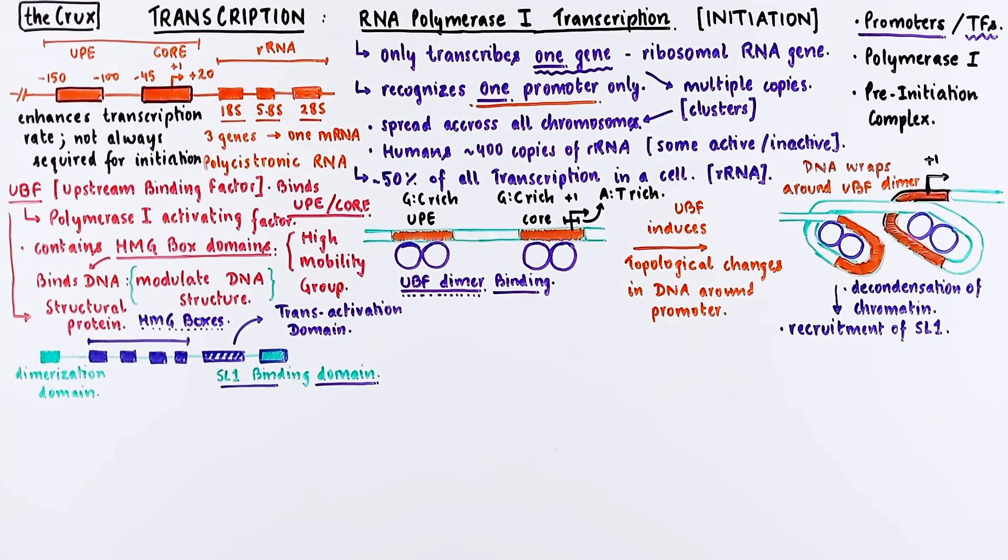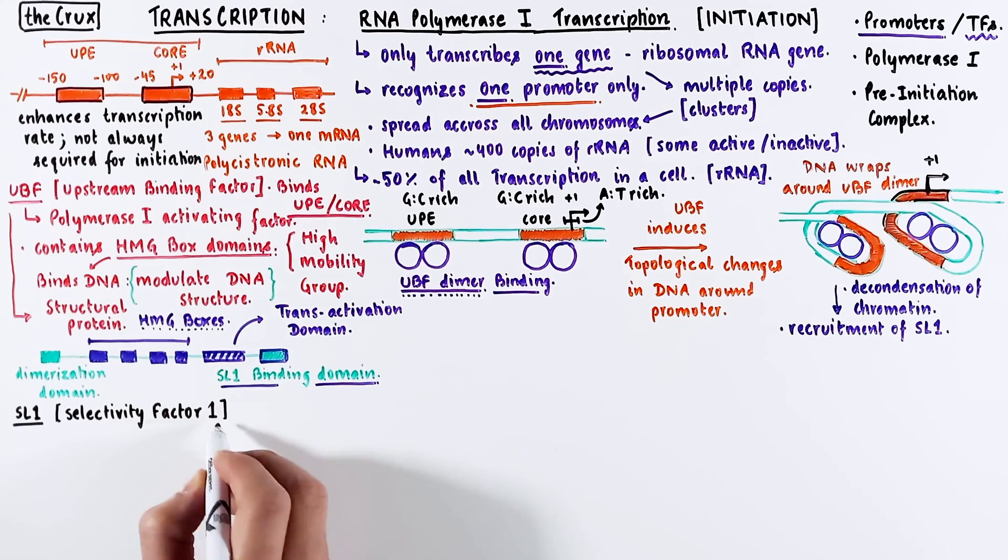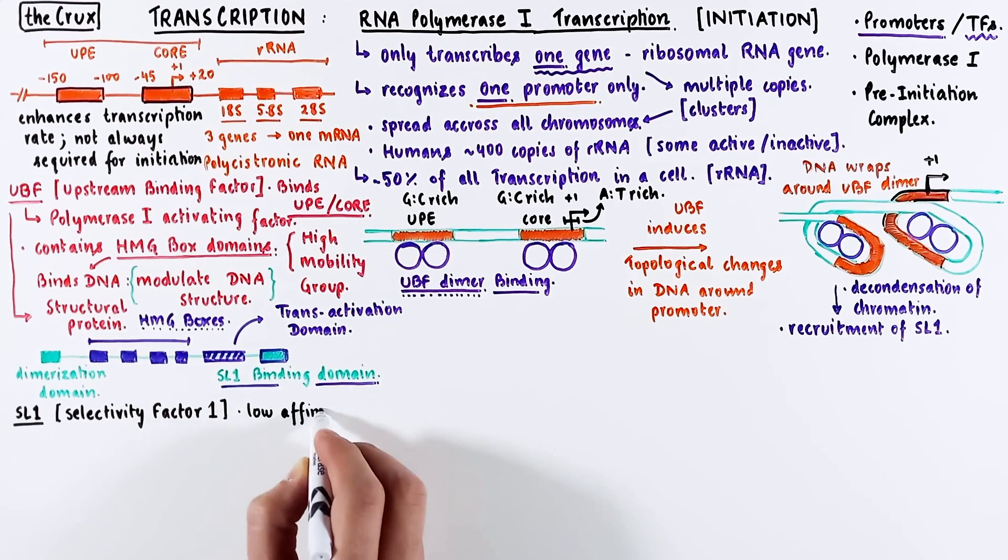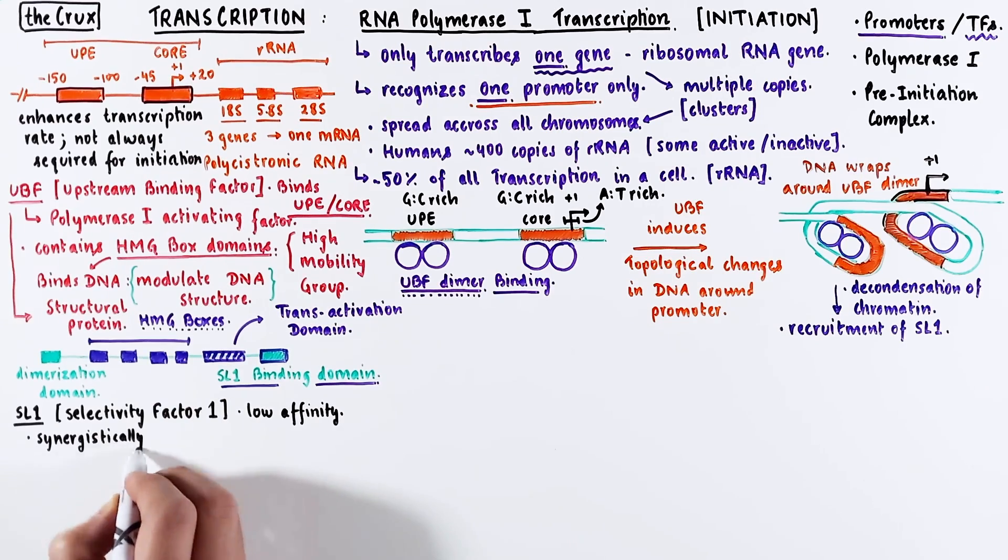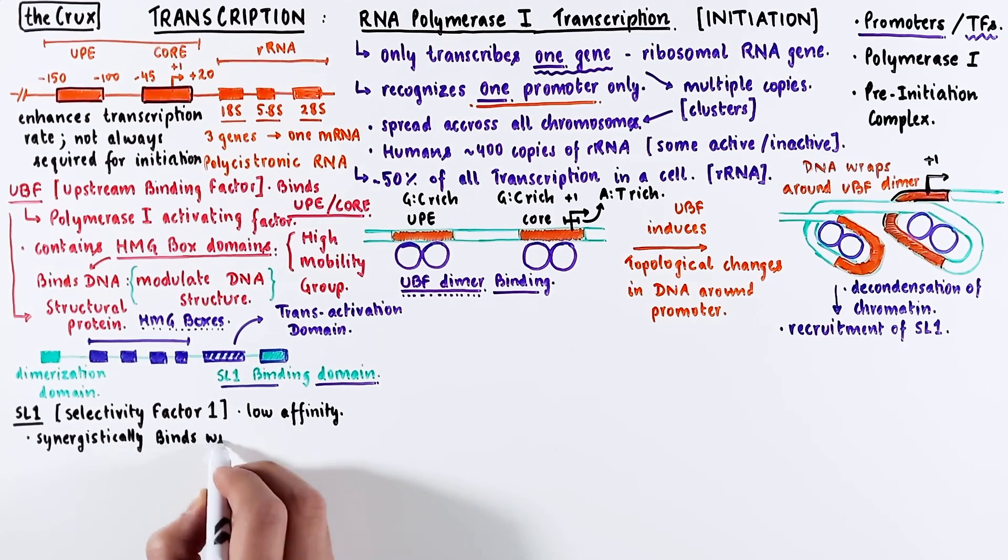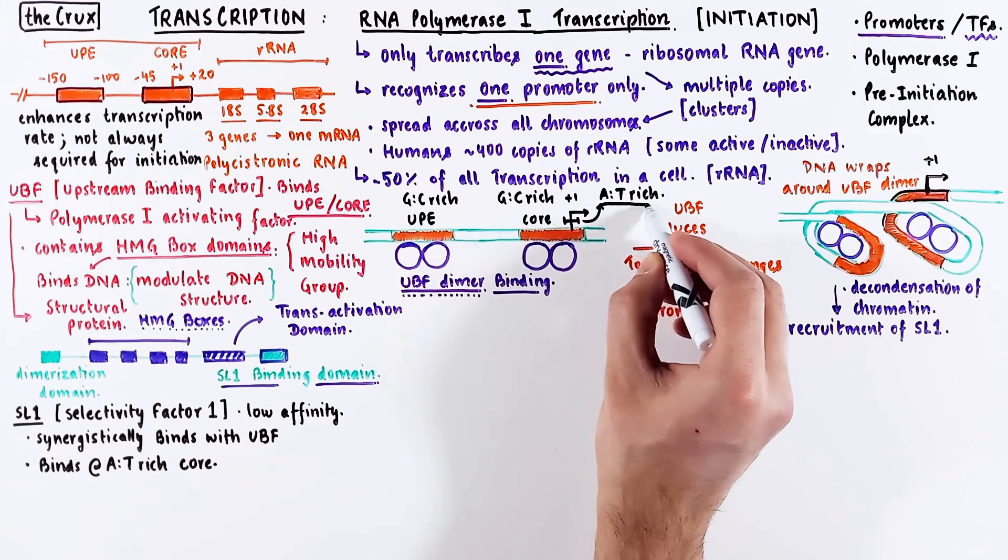Let's shed some light on the SL1 factor, which stands for selectivity factor 1. SL1 actually has low affinity towards the DNA, but its affinity synergistically increases when it is in contact with the UBF protein. The SL1 binds at the AT-rich region at the core promoter, which overlaps with the transcriptional start site.